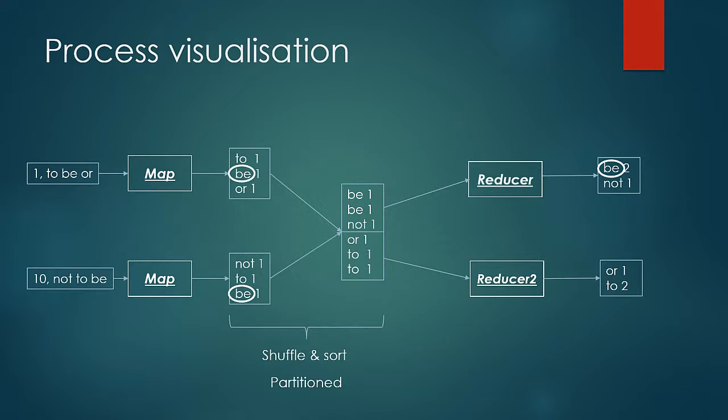It is important to understand the keys are processed in a distributed fashion at map phase, and at reduce phase it is brought together so that the processing of all the values to a particular key can be done by the same reducer. And all of this is possible because of the shuffle and sort steps.